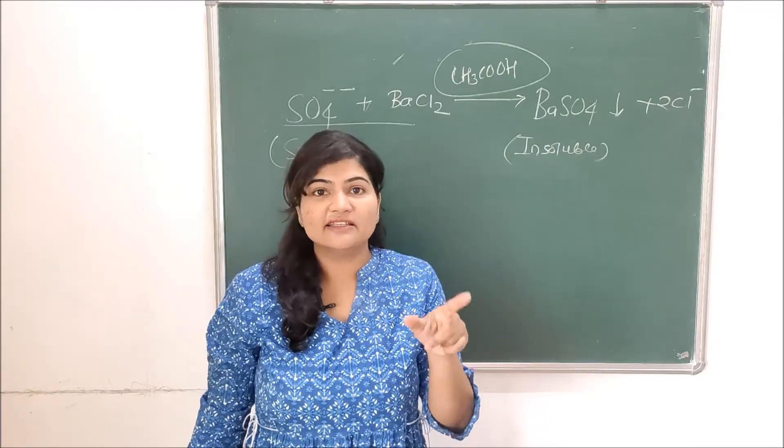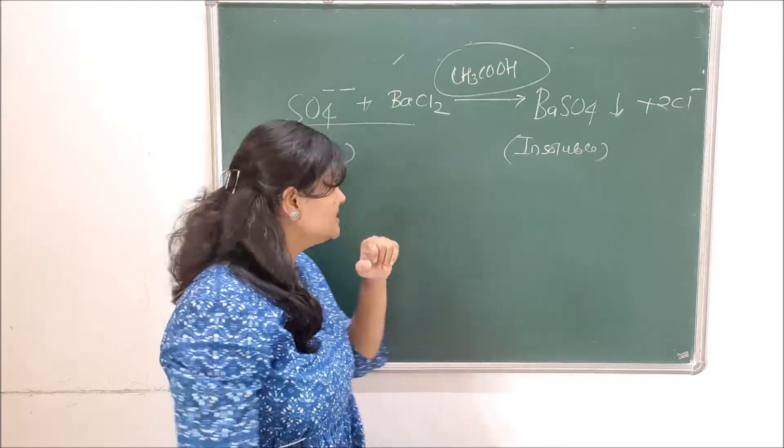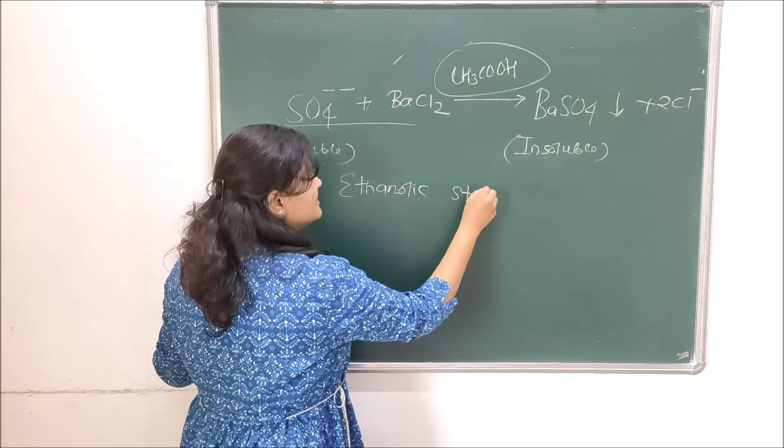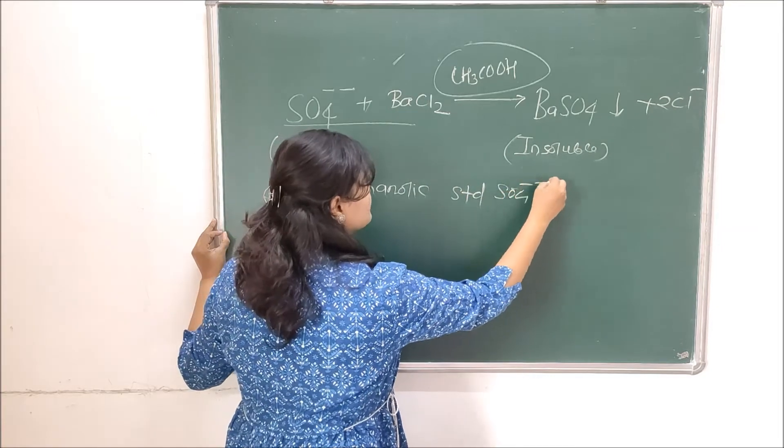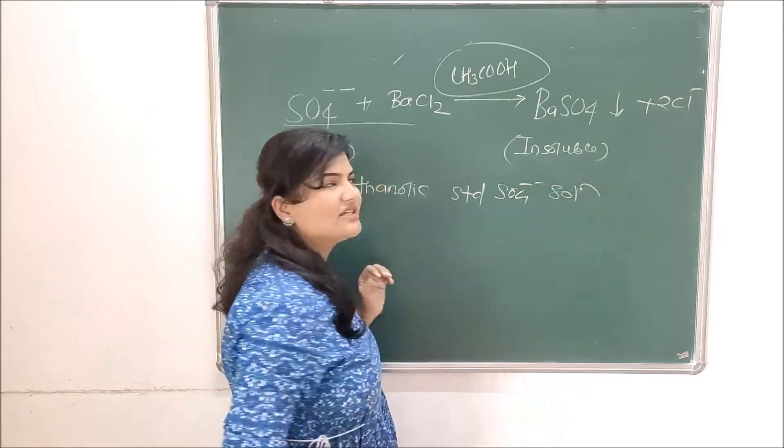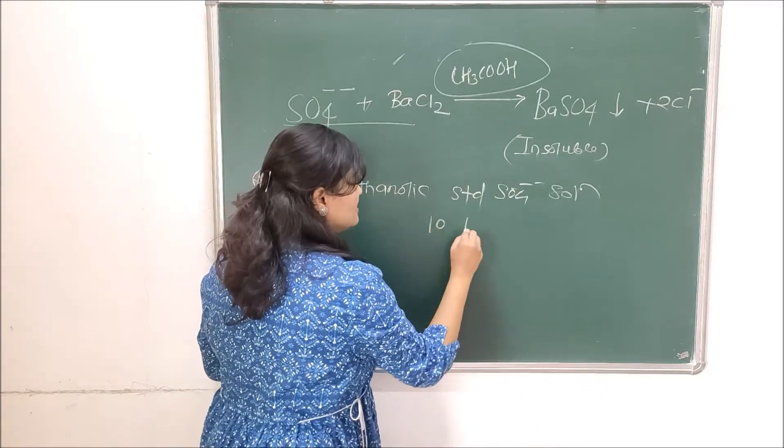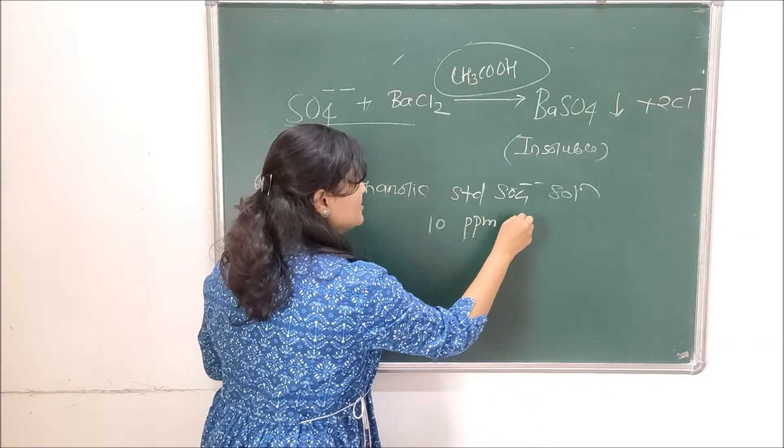Another thing which we add in limit test for sulfates is ethanolic standard sulfate solution or ethanolic sulfate standard solution. Now the concentration we take here is 10 ppm of sulfates.